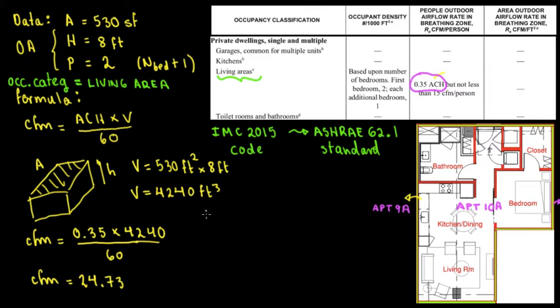But is that the outside air CFM? Not really. Because if I want to calculate the outside air CFM, that's going to be CFM divided by the following number. Do you remember, in the previous video, we were talking about the distribution effectiveness, Ez. So we were saying that Ez equals to 0.8 in most of the cases.